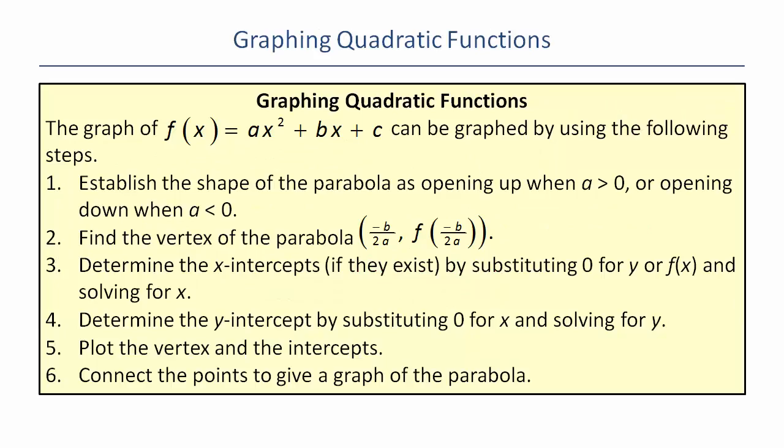So if we're going to graph a quadratic function, we need to figure out if it opens up or opens down by looking at a. We need to find the vertex. The vertex is really easy. You just do -b over 2a. Negative b over 2a. Very simple.